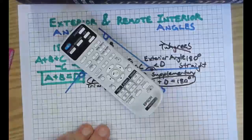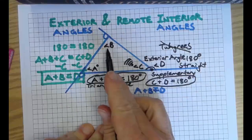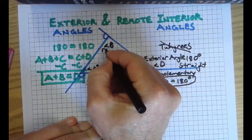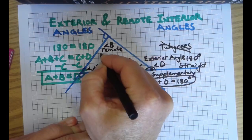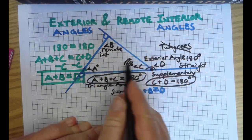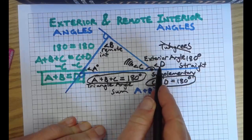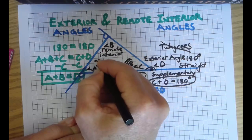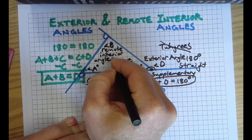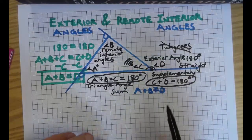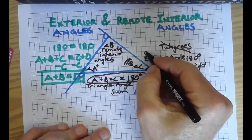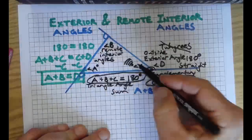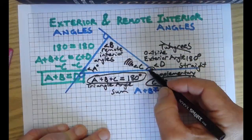That's where the remote comes in. We have angles that are remote. These are called remote interior, because they're inside the triangle. They're opposite of the supplement of the exterior angle. Remote interior angles. There's always two. This one's outside, so it's exterior. These are inside, so they're interior and they're remote.